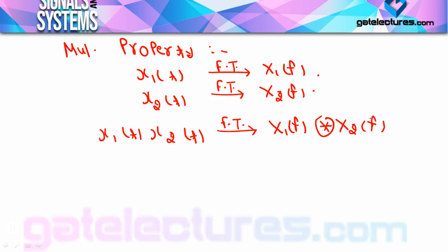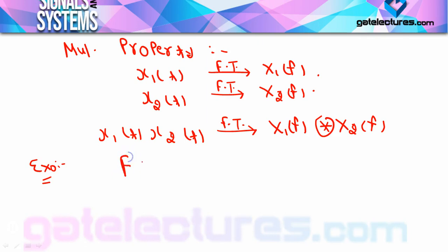I will give you a numerical example so you will understand this property. Suppose we have told you to calculate the Fourier transform of sinc(2t) multiplied by sinc(3t).